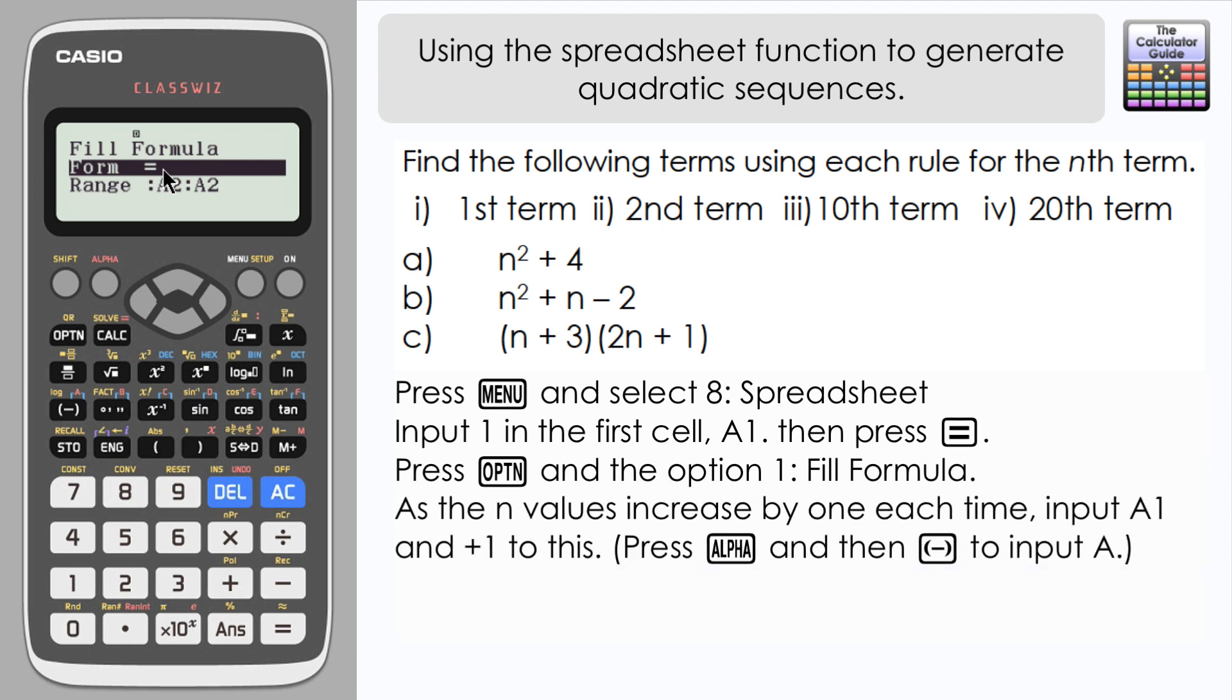And then what will happen is that this will be able to fill that formula in and it will just go down all the way to the 20th cell, A20. So let's fill in that formula. I'm going to input cell A1, so I need alpha and then A and then 1, and then each time I'm just adding 1, so it's just plus 1, equals. That's the formula.